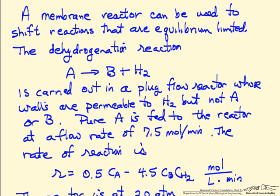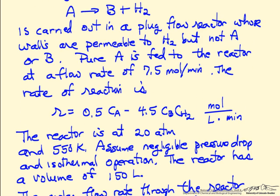In this case we're looking at a dehydrogenation reaction of A going to B plus hydrogen, using a plug flow reactor whose walls are permeable only to hydrogen — for example, a palladium membrane. We feed in pure A, and it's a reversible reaction. The motivation for removing hydrogen from the products is to shift the equilibrium further to the right, favoring the forward reaction.